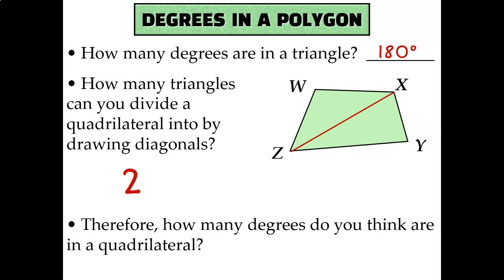So if there's two triangles in a quadrilateral and each triangle is worth 180 degrees, how many degrees are in a quadrilateral? Well, if there's two triangles and each triangle is 180, I can multiply 2 times 180 and find out that the sum of the angles of a quadrilateral is 360 degrees.